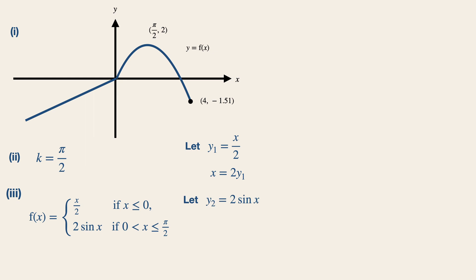Now let y2 be equals to 2 sin x. By making x a subject, we have sin inverse y2 over 2. Now to define the inverse of a piecewise function, we need to find the domain of each of these parts. The domain of 2x is actually the range of the original function, x over 2, which is x is less than equals to 0, as you can see on the graph over here.